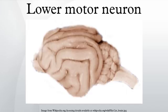Glutamate released from the upper motor neurons triggers depolarization in the lower motor neurons in the anterior gray column, which in turn causes an action potential to propagate the length of the axon to the neuromuscular junction, where acetylcholine is released to carry the signal across the synaptic cleft to the postsynaptic receptors of the muscle cell membrane, signaling the muscle to contract.